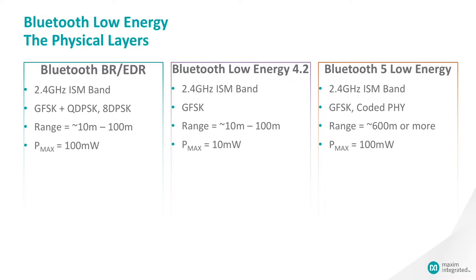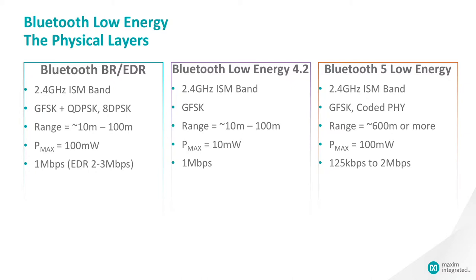For raw data rate, both Bluetooth and Bluetooth Low Energy started out at 1 Mbps. From there, they diverged in different directions. Conventional Bluetooth needed more throughput, so the Bluetooth SIG added new modulation techniques to increase raw data rate, first to 2 Mbps and then to 3 Mbps. Bluetooth Low Energy stayed with GFSK modulation, but in BLE 5 they added a coded PHY that allows the PHY to use either 2 or 8 symbols to represent 1 bit. That redundancy provides extended range and better interference rejection at the expense of data rate — at 2 symbols per bit you get only 500 kbps, and at 8 symbols per bit just 128 kbps. The SIG also added a double data rate option that bumps BLE speed up to 2 Mbps.